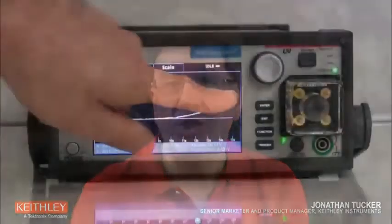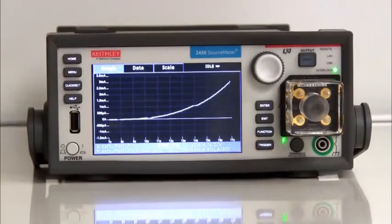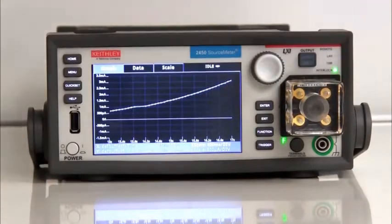Lastly, you can pinch and zoom and swipe with the 2450 to look closely at specific areas of the plot.